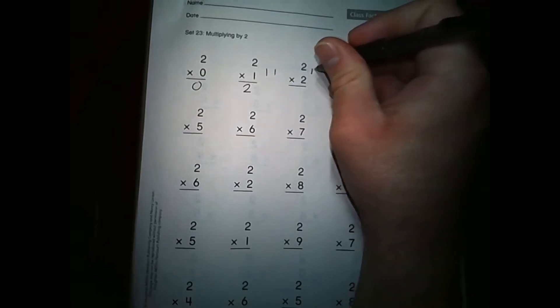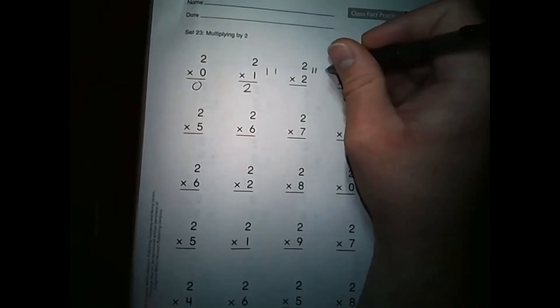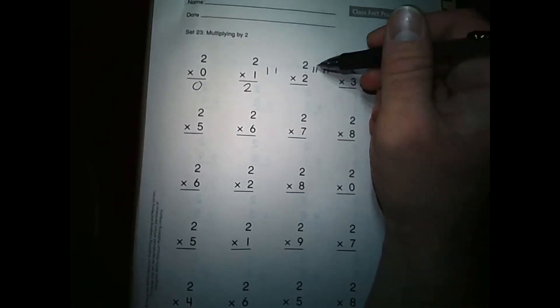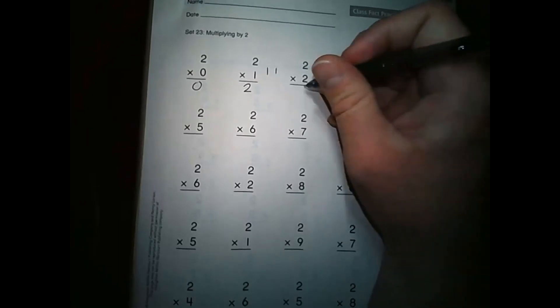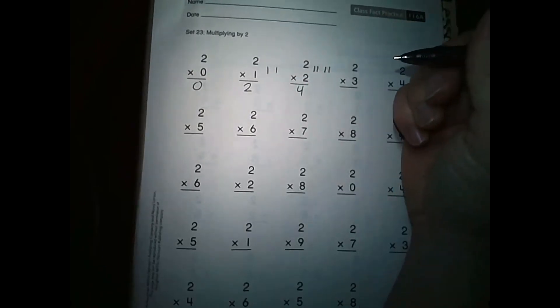Let's look at two times two. Well, that's telling us we have two groups of two. So here's my first group of two, and here's my second group of two. Now let's just go ahead and count those. One, two, three, four. So two times two is four. It's the same thing as if we do two plus two.